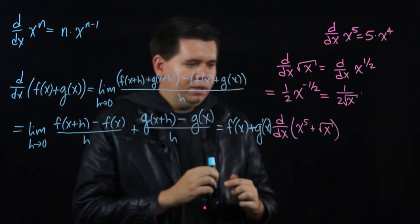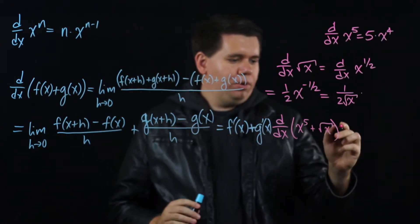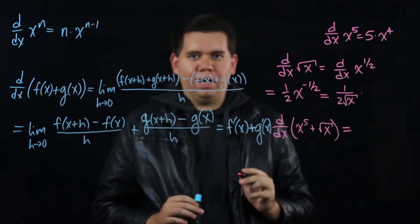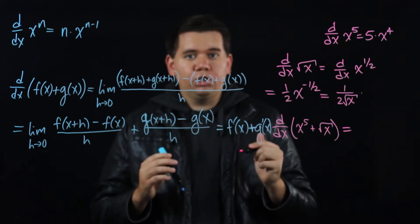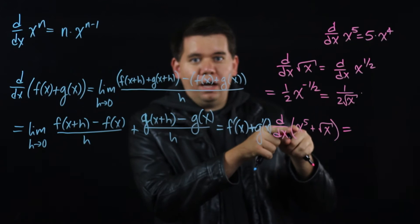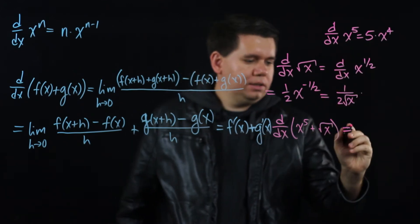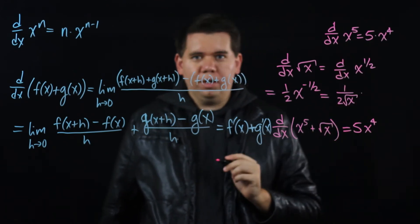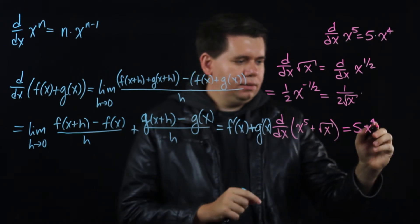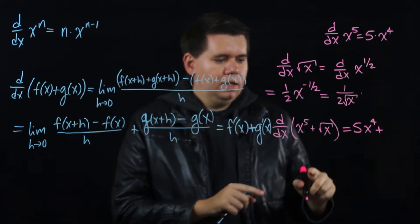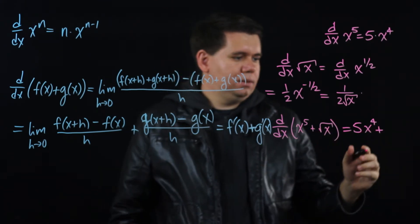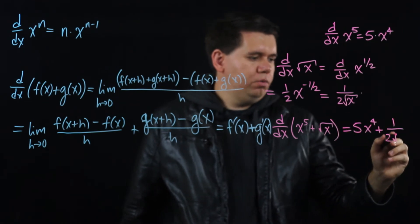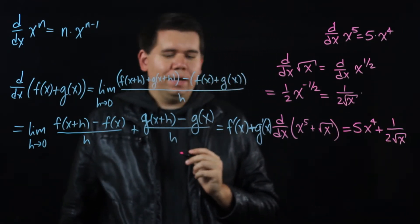For our example, that tells us: if we want to calculate the derivative of x to the fifth plus the square root of x, it's just going to be the derivative of the first piece — which is 5x to the fourth — plus the derivative of the second piece, which we found was 1 over 2 times the square root of x.